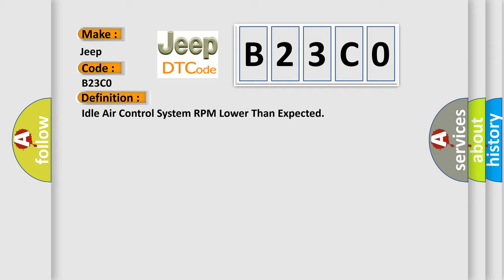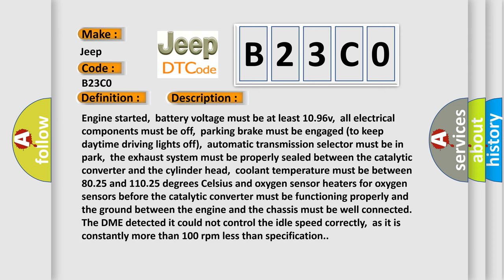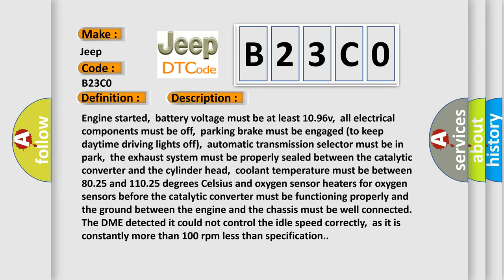And now this is a short description of this DTC code. Engine started, battery voltage must be at least 10.96V, all electrical components must be off, parking brake must be engaged to keep daytime driving lights off, automatic transmission selector must be in park,